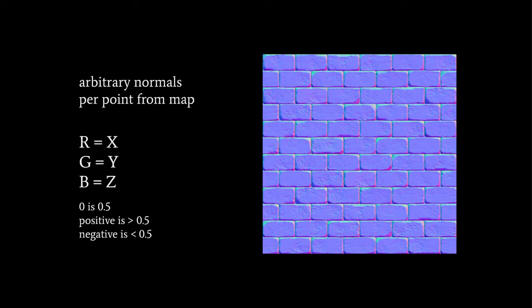For vectors pointing to the right, they're going to have a larger red component and look reddish. For vectors pointing up with a large y value, they're going to look greenish. Normals pointing up and to the right are going to be yellowish, because R and G together make yellow, and so forth.